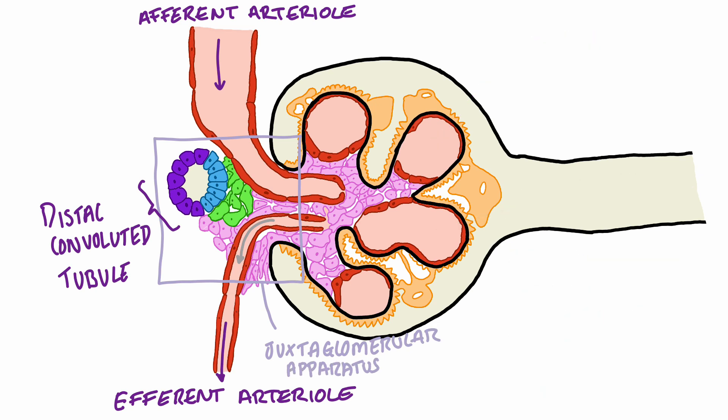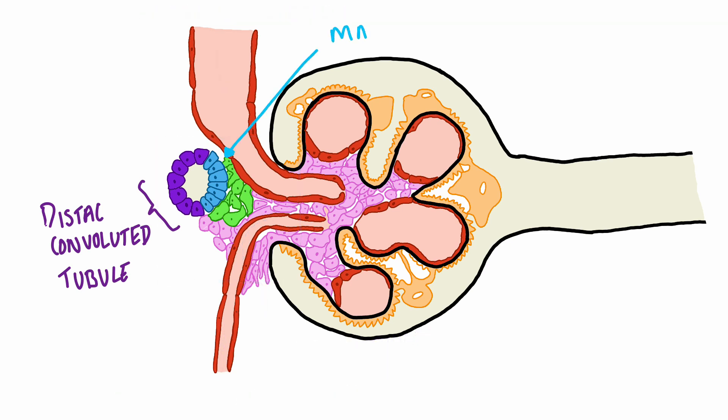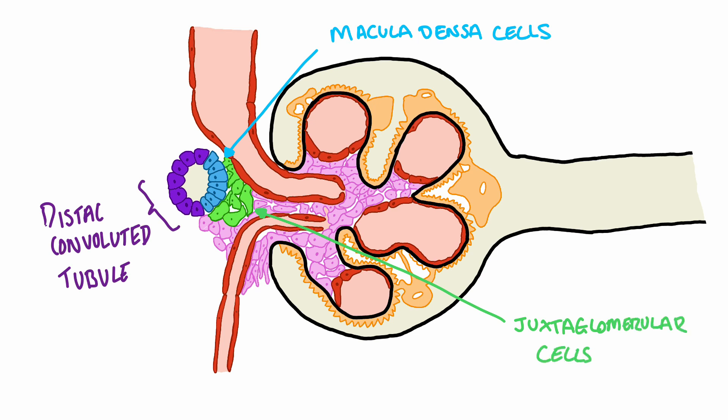At the juxtaglomerular apparatus, the distal convoluted tubule has specialised epithelial cells called macula densa cells. These macula densa cells control the activity of another specialised epithelial cell called the juxtaglomerular cell. The kidney aims to keep the amount of plasma being filtered out of the glomerulus into the proximal tubule at a constant. The amount of plasma being filtered is determined by the filtration pressure, which is dependent on the difference in diameter between the afferent and efferent arteriole. The kidney controls this via a mechanism called tubuloglomerular feedback.